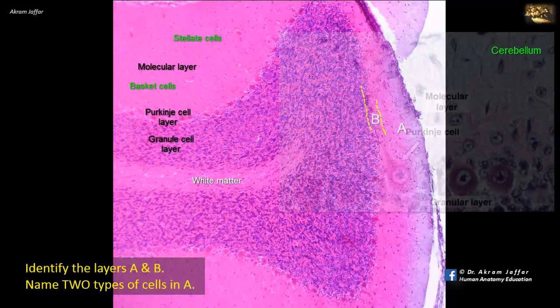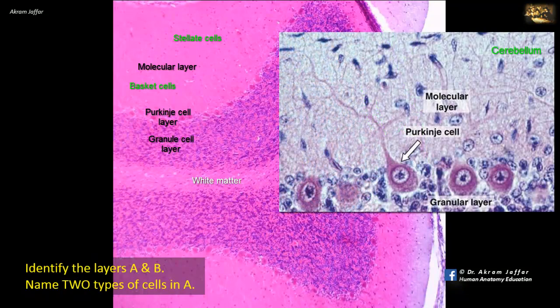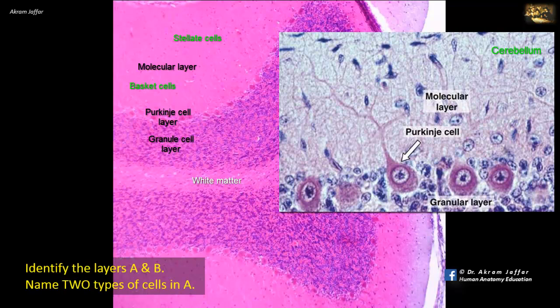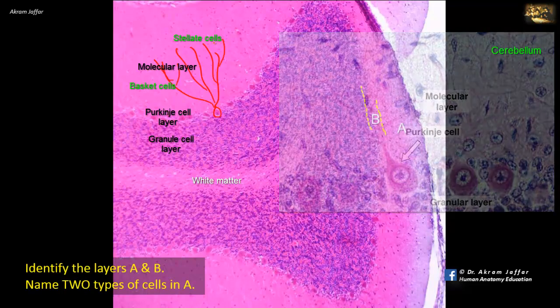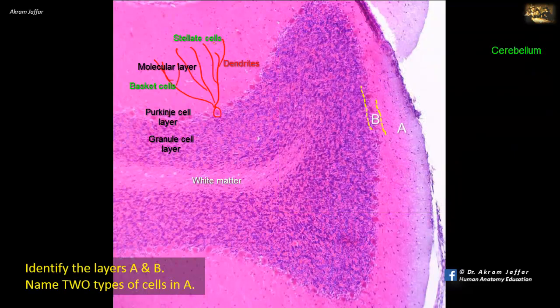Purkinje cells are flask-shaped cells. Their dendrites pass into the molecular layer where they undergo profuse branching. The axon arises at the base and provides the efferent pathway from the cerebellar cortex.